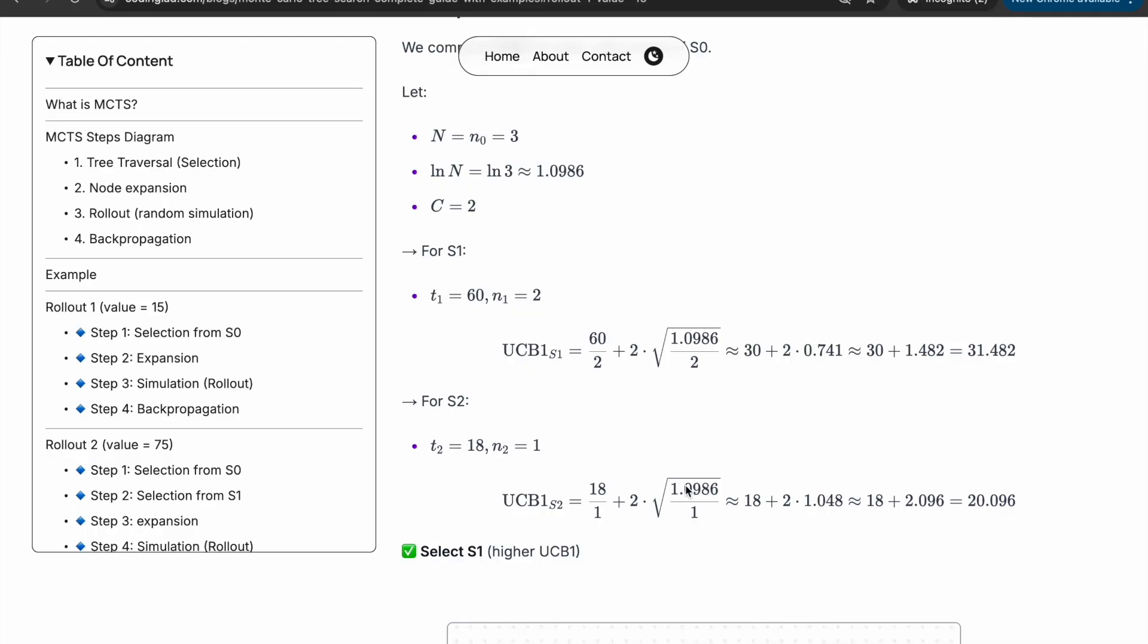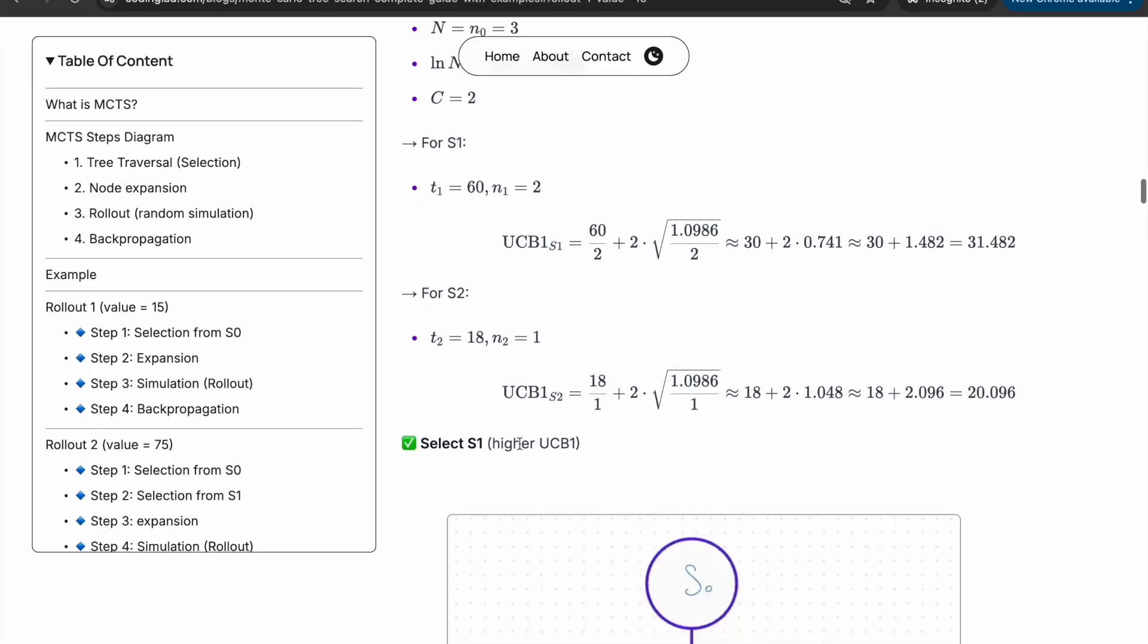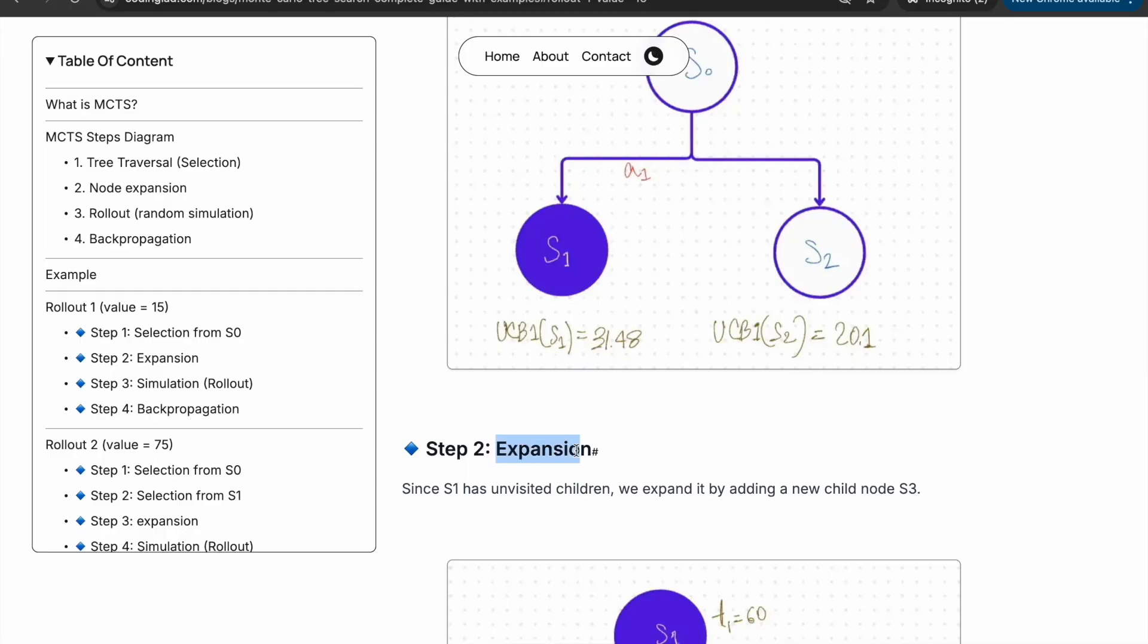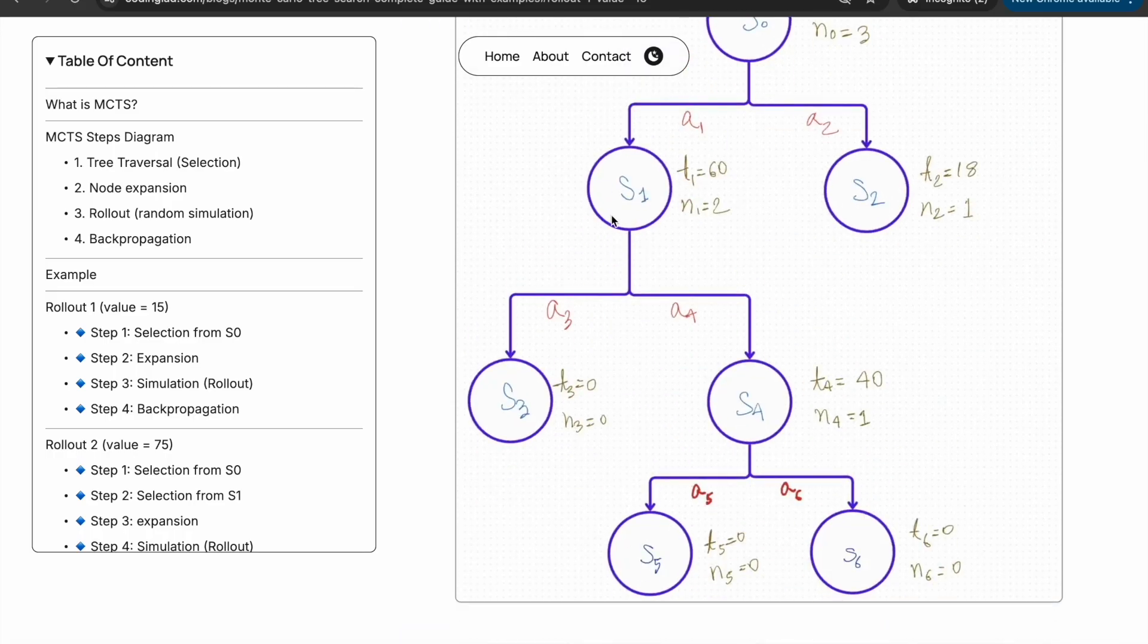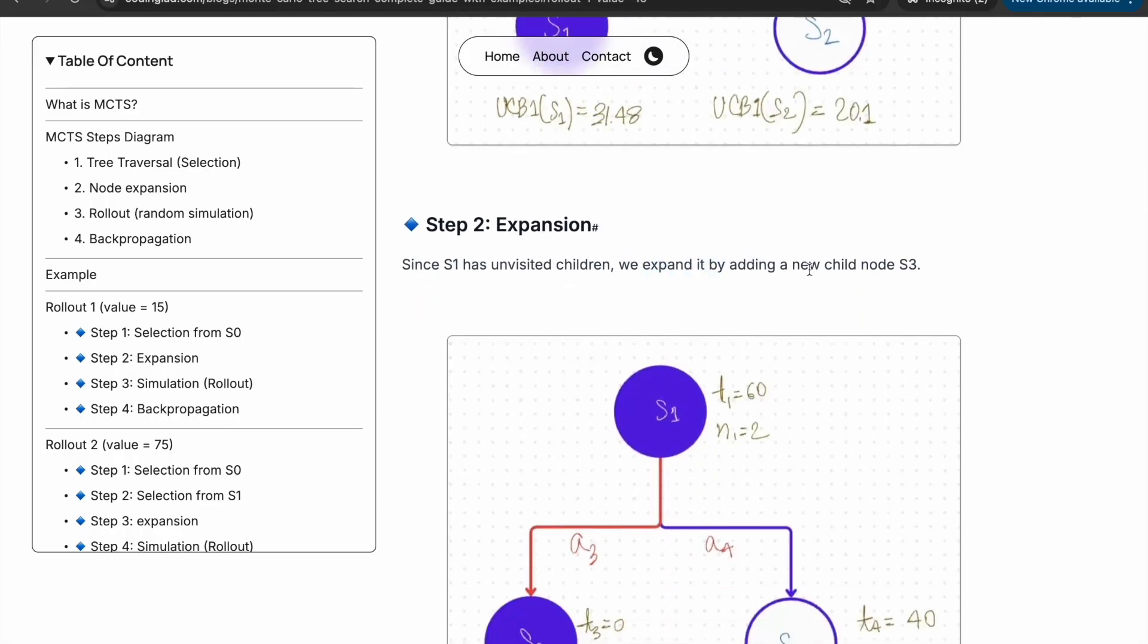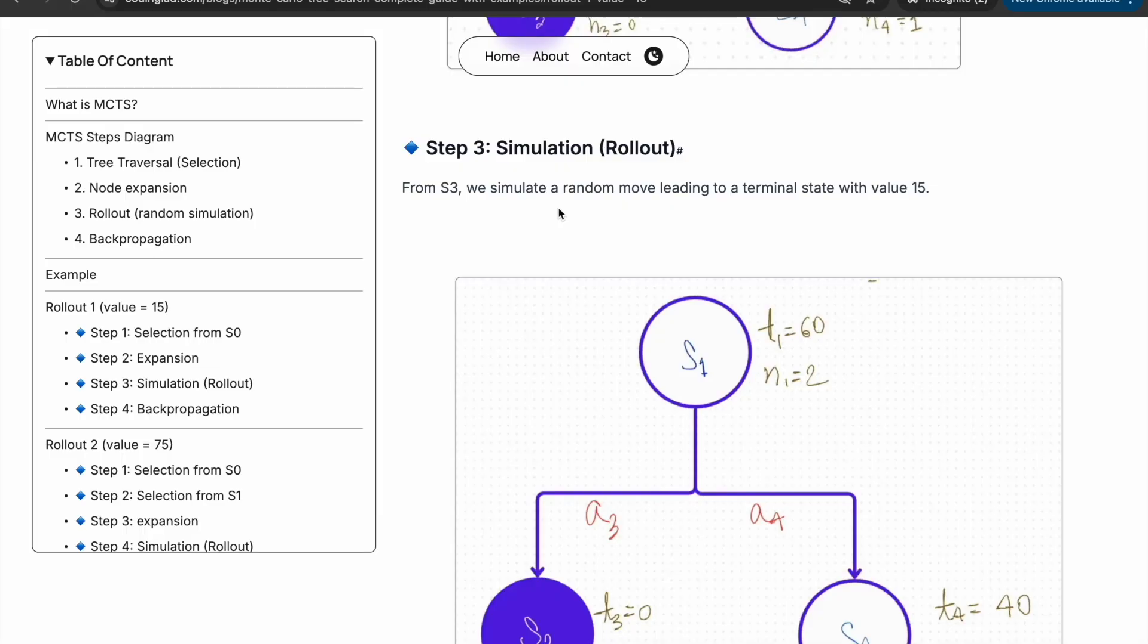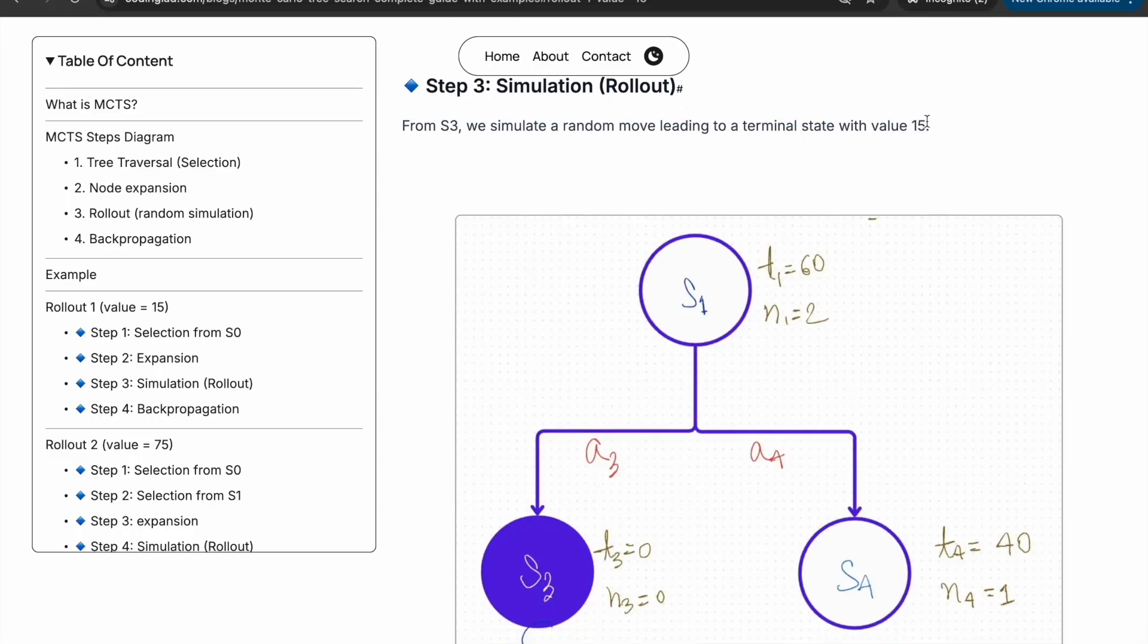We are selecting s1 as it has higher UCB1 value. Then comes expansion, because s1 has unvisited children. If you see carefully, s1 has two children: s3 and s4. S3 hasn't been visited yet, that's why n is 0 for s3. Since s1 has unvisited children, we expand it by adding a new child node, s3. Now we will perform simulation or rollout. From s3, we will simulate random moves leading to a terminal state with value 15.